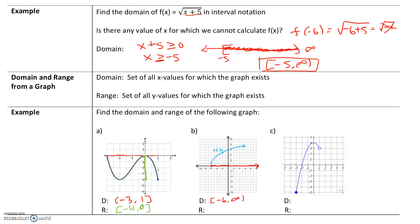Now for the range, we're looking vertically for the smallest y value for which the graph exists. At negative 2 and negative 1 and 0, the graph doesn't exist. The smallest y value for which the graph exists is 1. For all y values above that, the graph keeps going. So our range is 1 comma infinity.